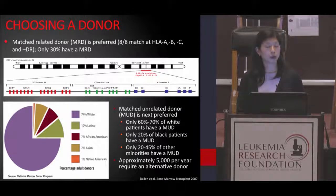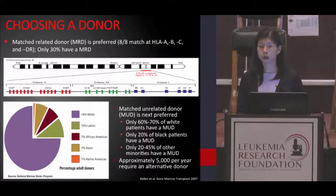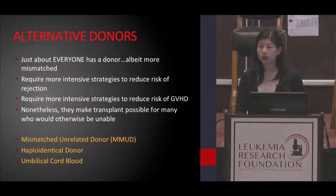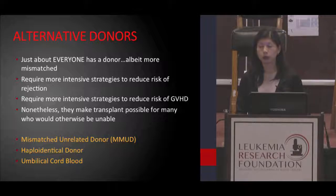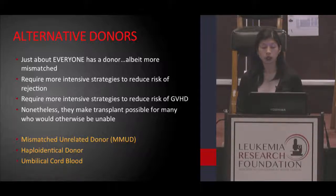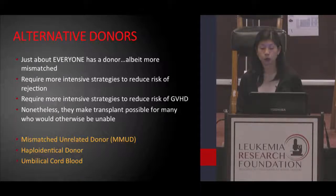This leaves approximately 5,000 people a year without a donor. For these people, we have advanced approaches with what we call alternative donors so that these people have the opportunity to undergo this potentially life-saving treatment. With alternative donors, just about everyone has a donor in this day and age. Though these donors are less matched or more mismatched, and therefore require more intensive strategies to prevent rejection as well as graft-versus-host disease, they make transplant possible for many who would otherwise be unable to undergo transplantation.